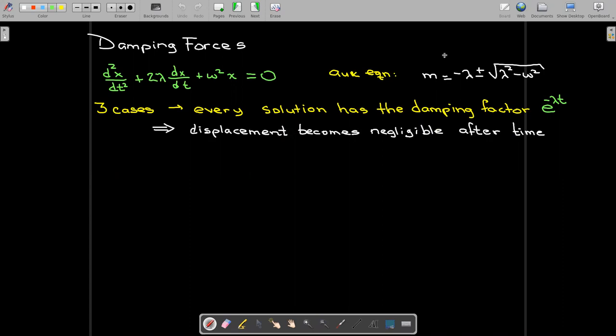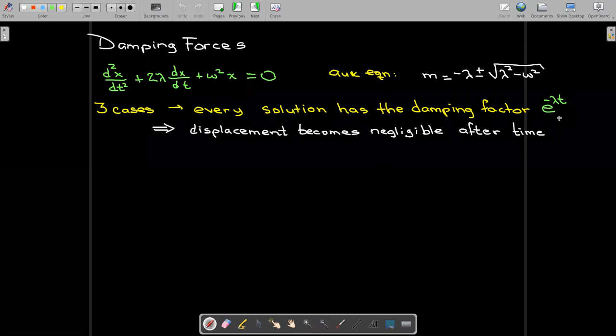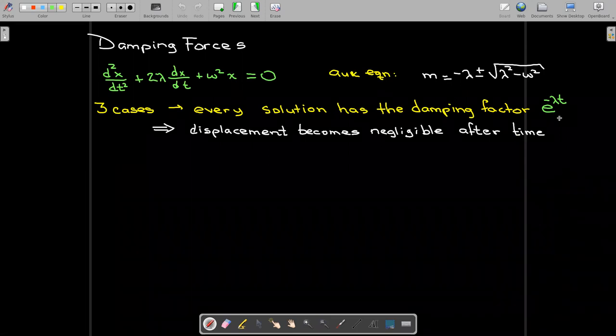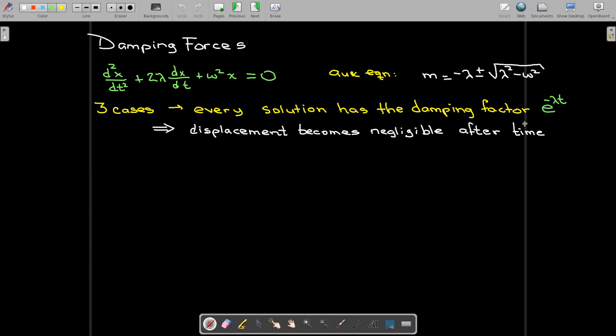Certainly one thing that's true is that every solution, no matter what happens under the radical, is going to include a factor of e to the negative lambda t, which tells us that as t gets larger, this multiplying factor is going to get smaller. In fact, it's going to get smaller very quickly. And so the displacement becomes negligible after a certain period of time.